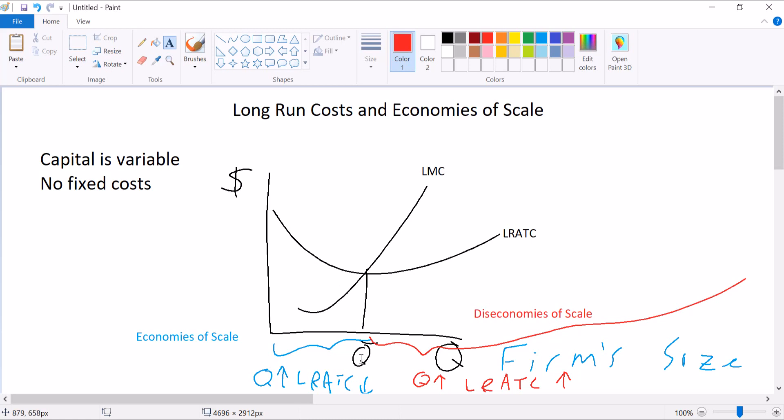On this range, after this Q bar, we have diseconomies of scale where bigger firms will start to have higher average costs. And the way your costs in your industry are shaped will have big impact on how many firms are in your market, because the firms that will survive the best are the firms down here at the bottom.